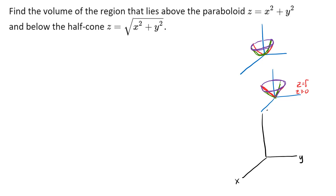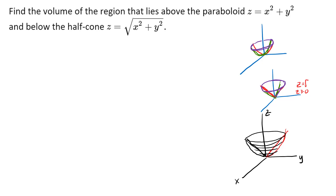I'll start by thinking about what's going on in the yz-plane. The side of the cone is the line z equals y, and on the paraboloid in the yz-plane I have the parabola z equals y squared — so there's a slice in the yz-plane bounded by those two curves. In three dimensions, the cross-sections going up the z-axis are all circles, so the solid region has the cone on the inside and the paraboloid forming the outside bowl shape — like a cone on the inside and a bowl on the outside.